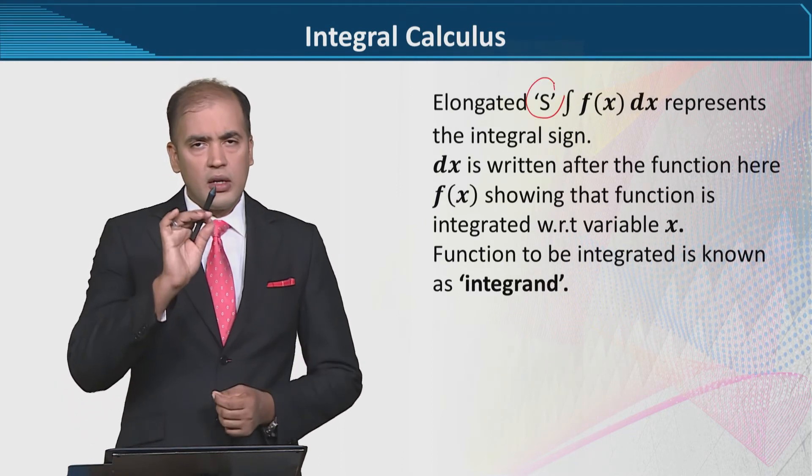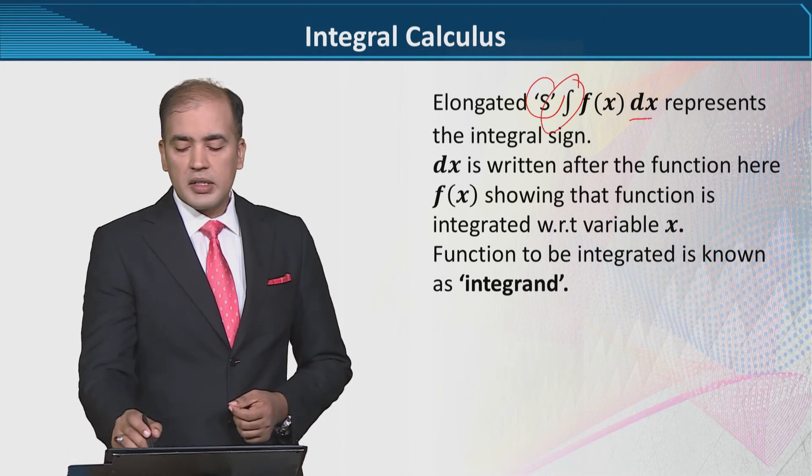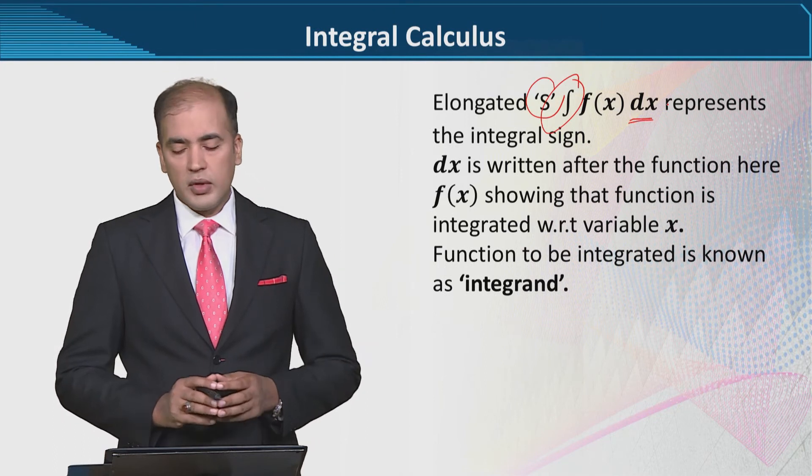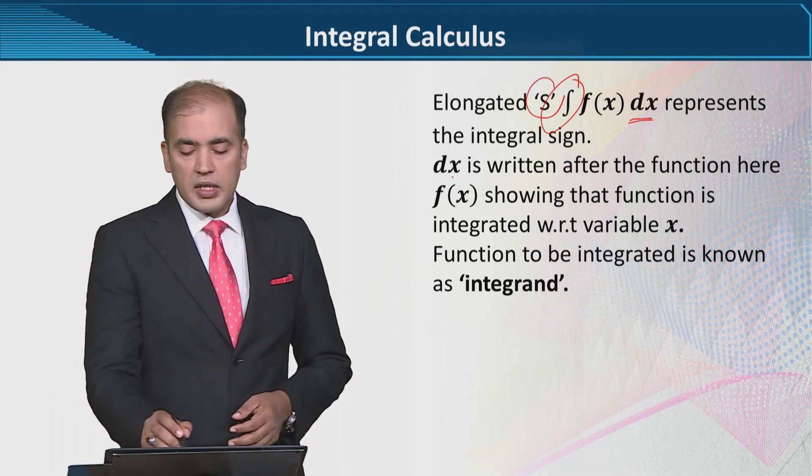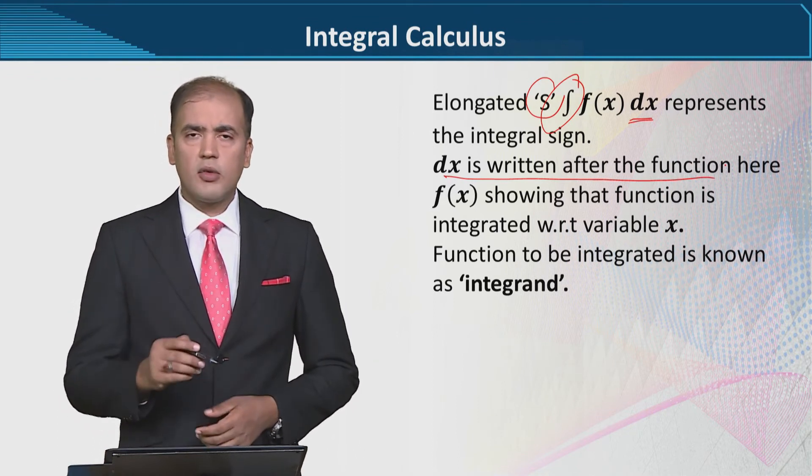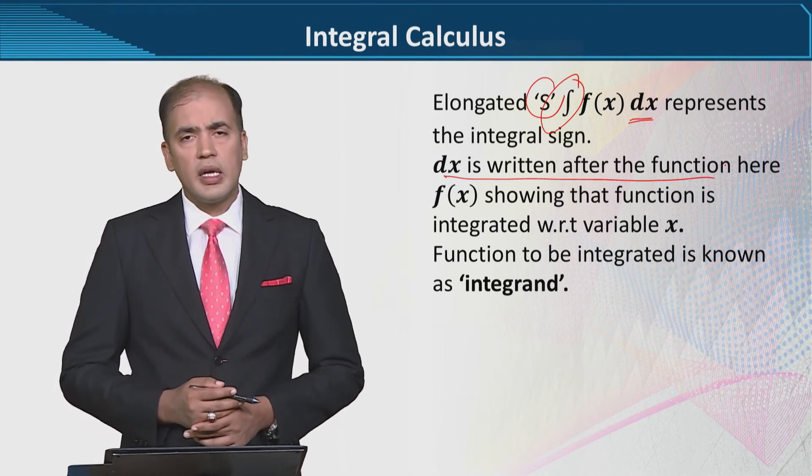Isse represent kiya jata hai elongated s se. Jaise s ko humne thoda sa elongate kar diya. Or aap dekh rahe hain yahan par likha hua hai. Or isse humein ek cheez aati hai. Differential of that variable jo ka independent hai. Yahan par wo dx hai. Or yeh bata raha hai ke hum x ke lahaz se integration kar rahe hain. Or jo elongated s hai, wo bata raha ke differentiation nahi balke integration.